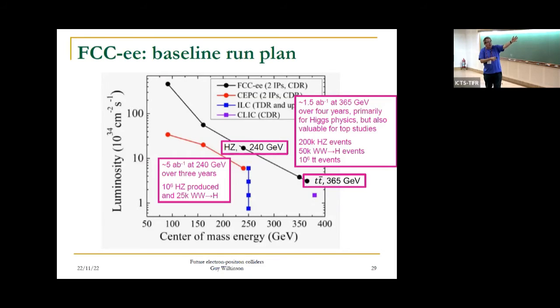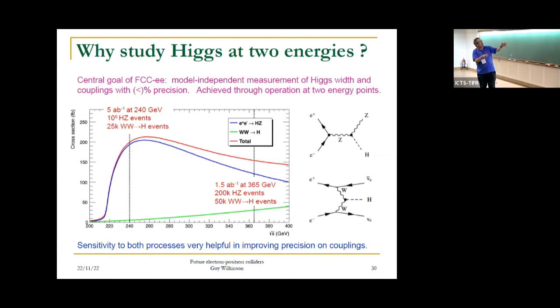We need to talk about the Higgs. Higgs physics will take place at two key energies. The first way you produce the Higgs together with the Z - that will be 5 inverse attobarn taken over probably three years. That will be 10^6 events. Then at this higher energy, that is WW fusion. Here you see the two processes, the cross-sections against center of mass energy. Here the HZ dominates. Here you're getting more contribution from the WW Higgs fusion. These are very complementary, bringing very useful additional information.